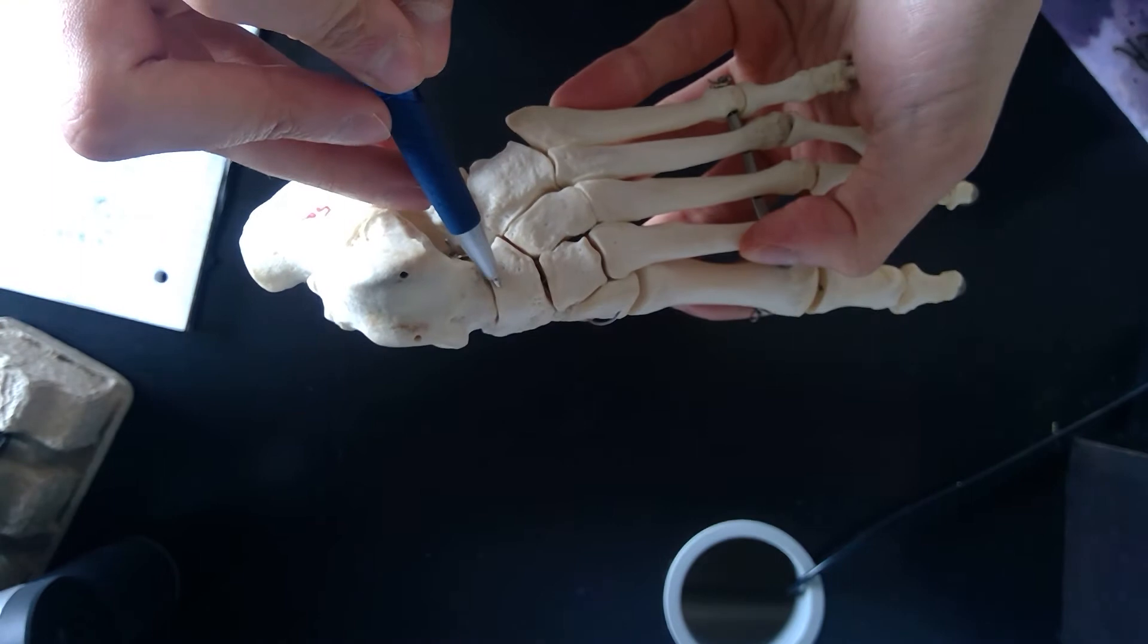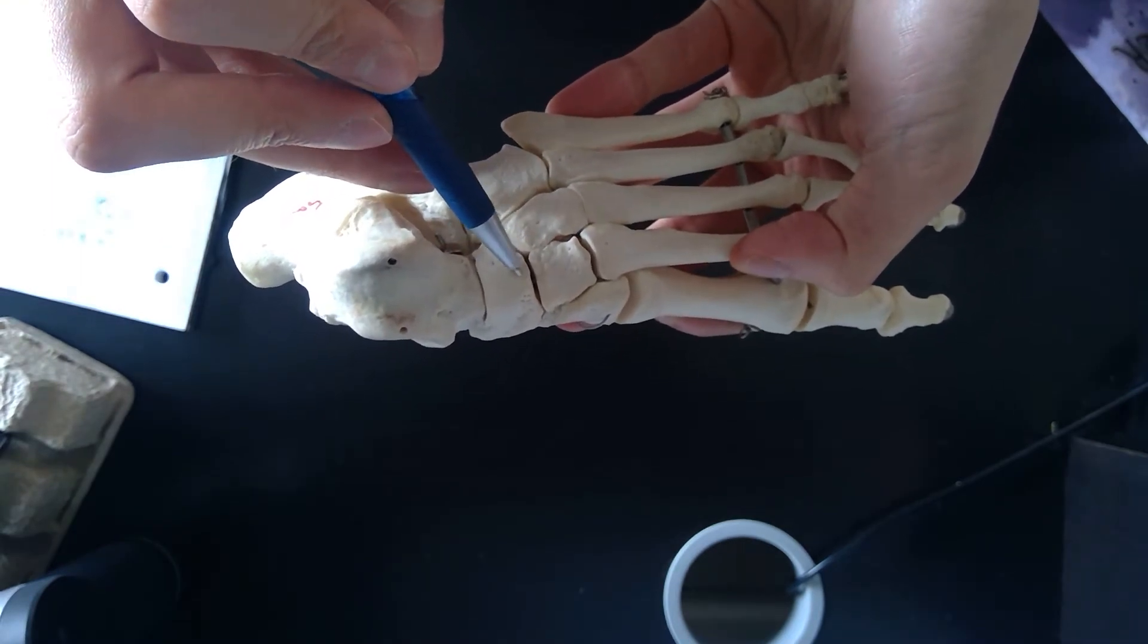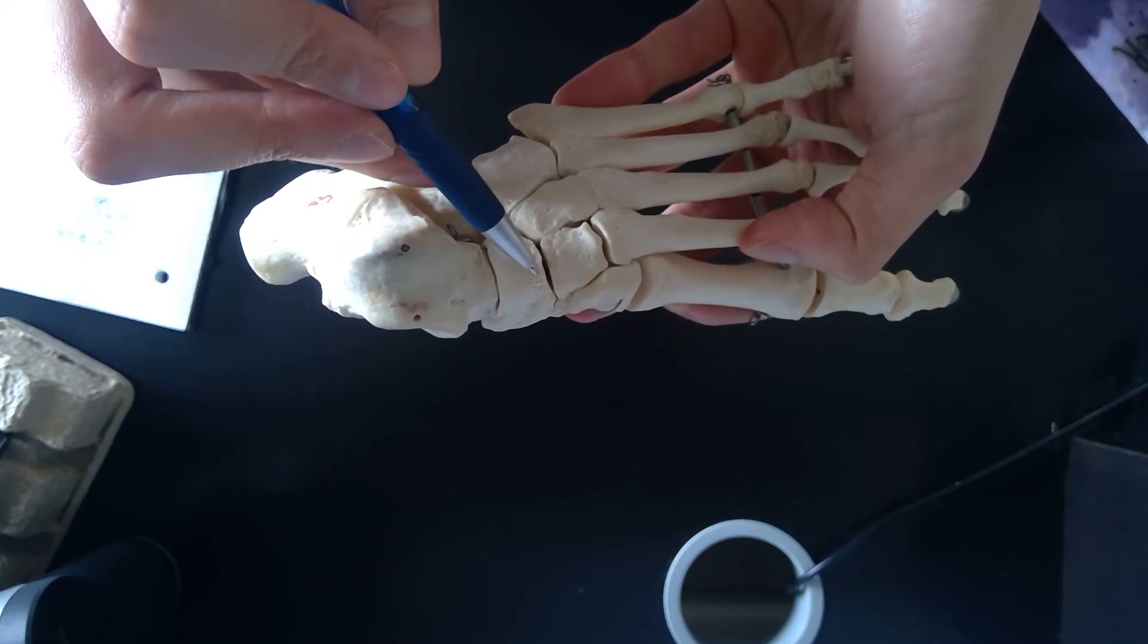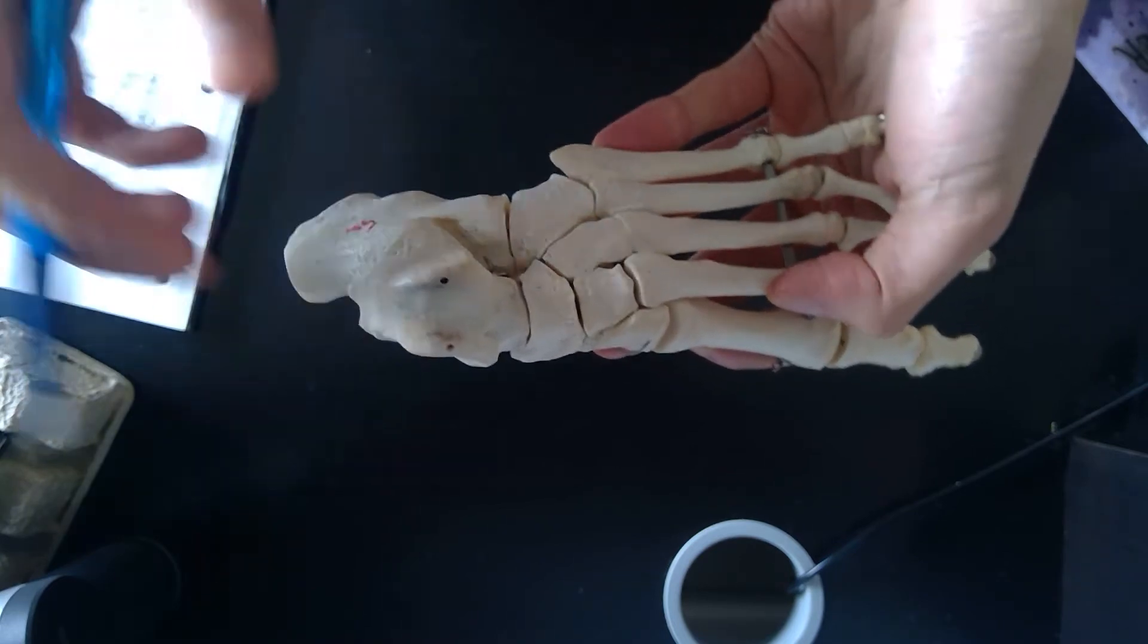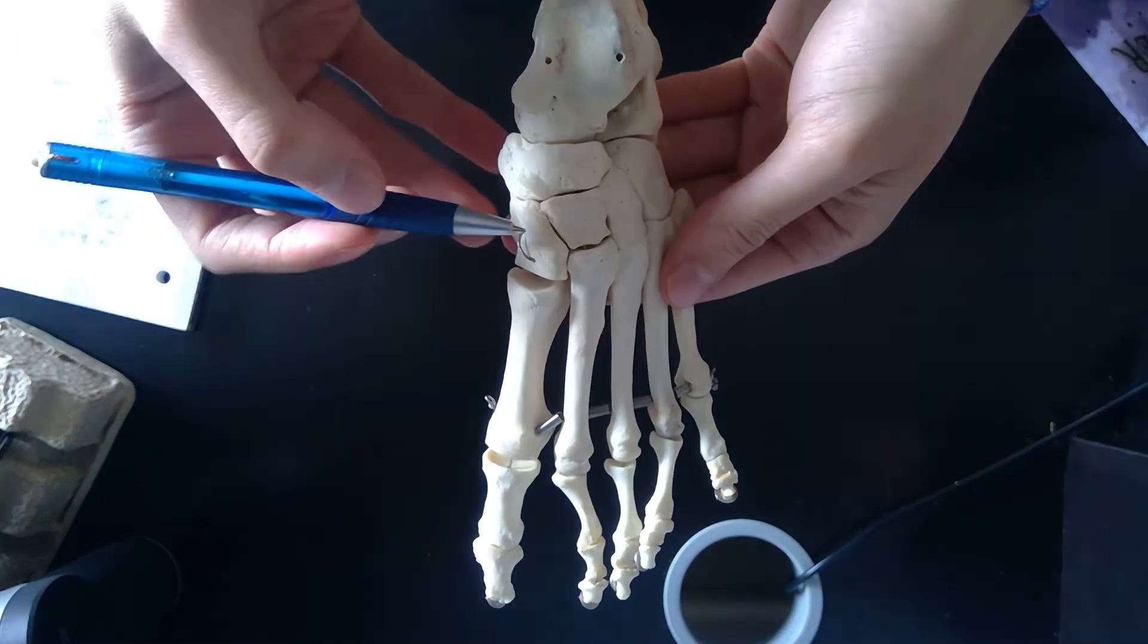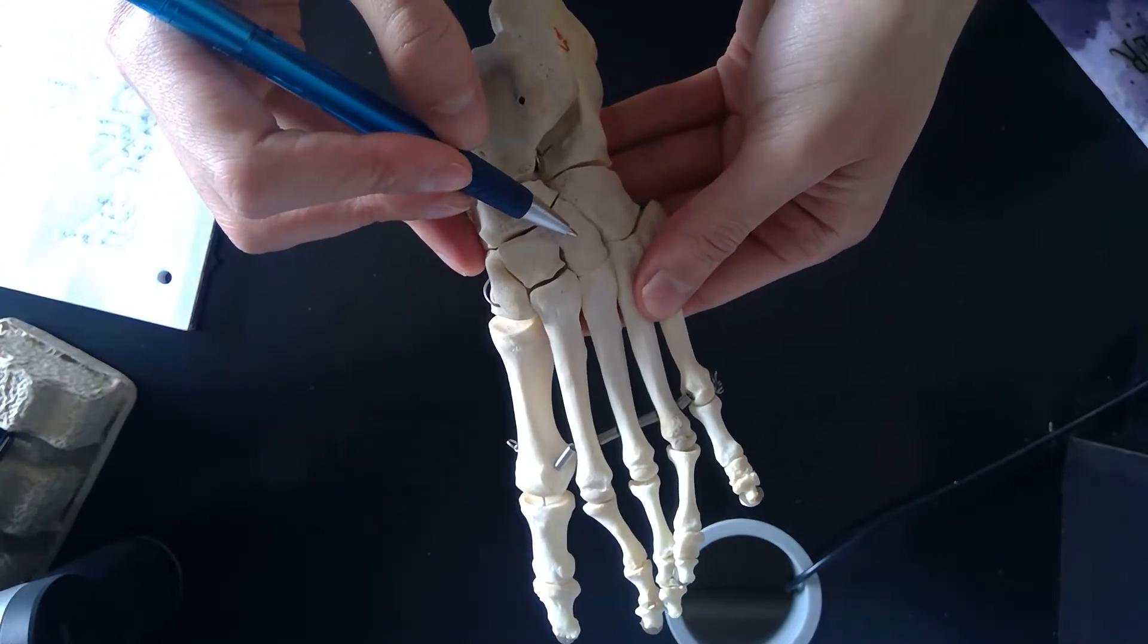The navicular slightly anterior to that one. And then the three bones that I'd like to think articulate with that anterior surface of the navicular are your cuneiforms. So shifting it again, we have a medial, intermediate, and lateral cuneiform.